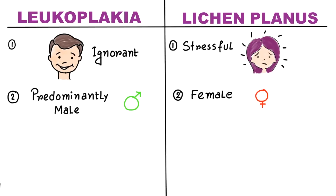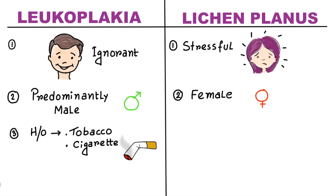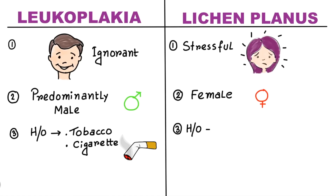Next thing is habit history. Ask the patient about their habits. Leukoplakia mostly occurs in those patients who have tobacco or smoking habits, or both. But I would like to mention that there is a special type called cryptogenic Leukoplakia, which occurs in non-smokers and non-tobacco chewers — it is actually idiopathic Leukoplakia. Patients with Lichen Planus most of the time don't have any habit.